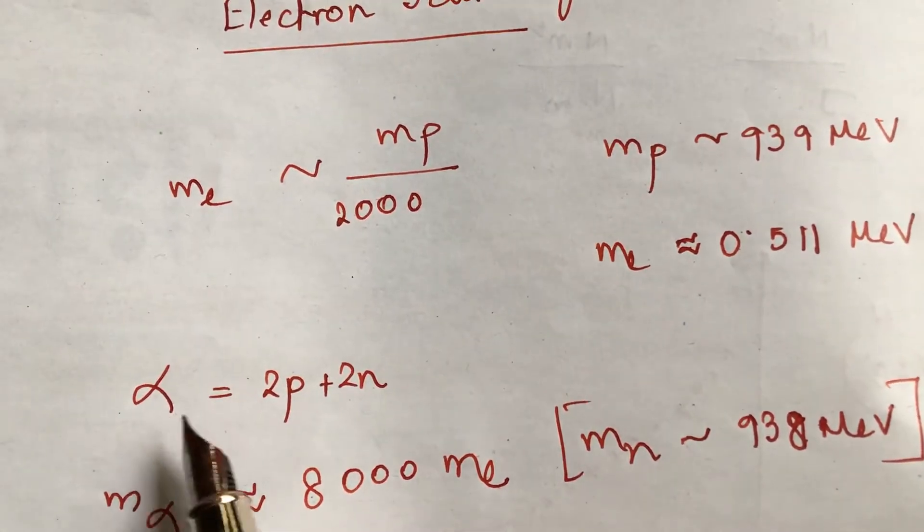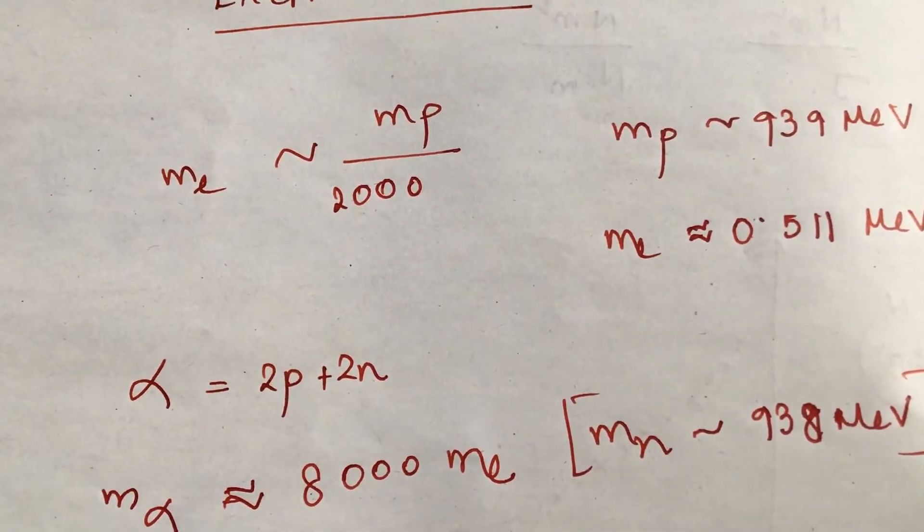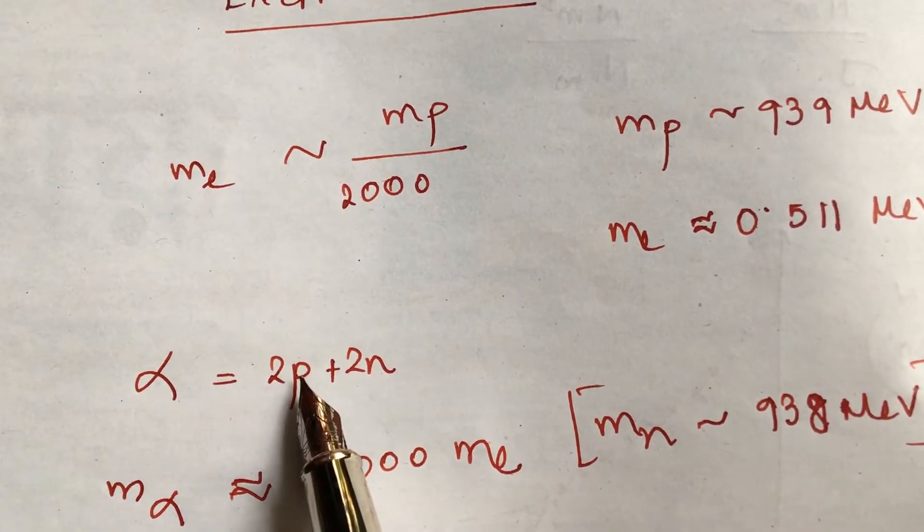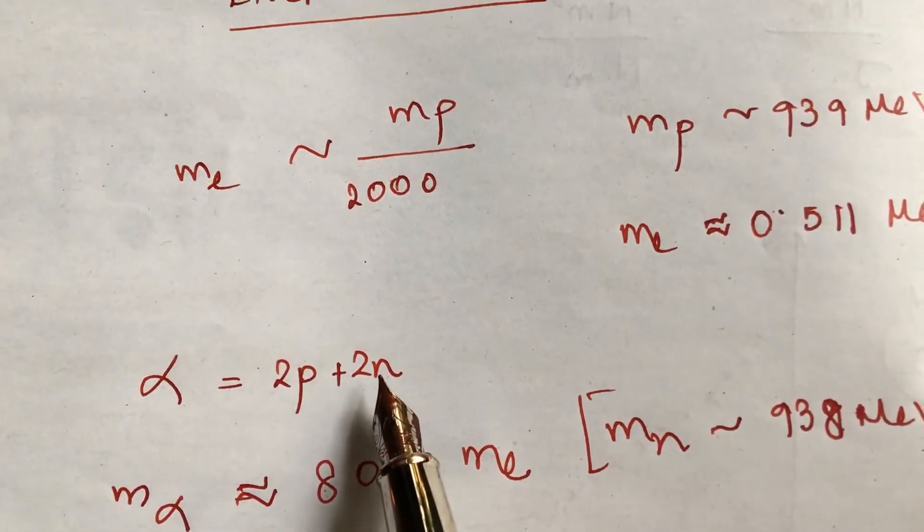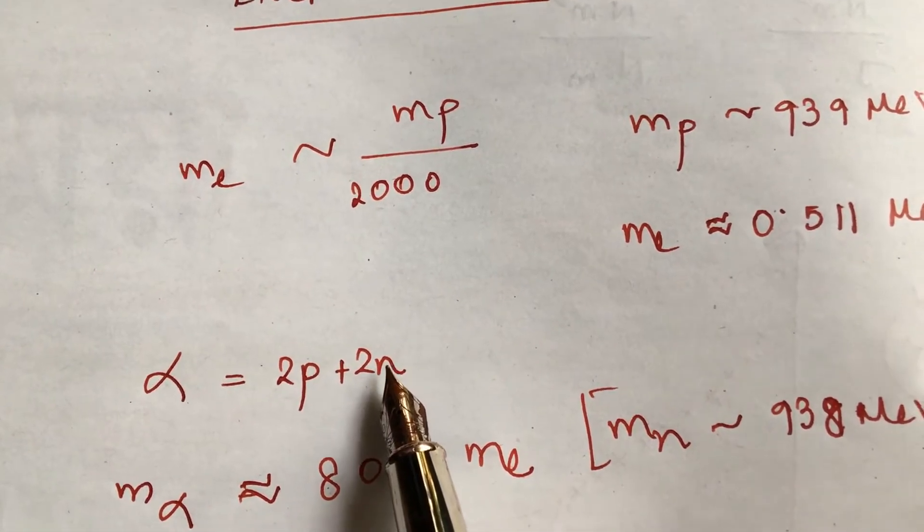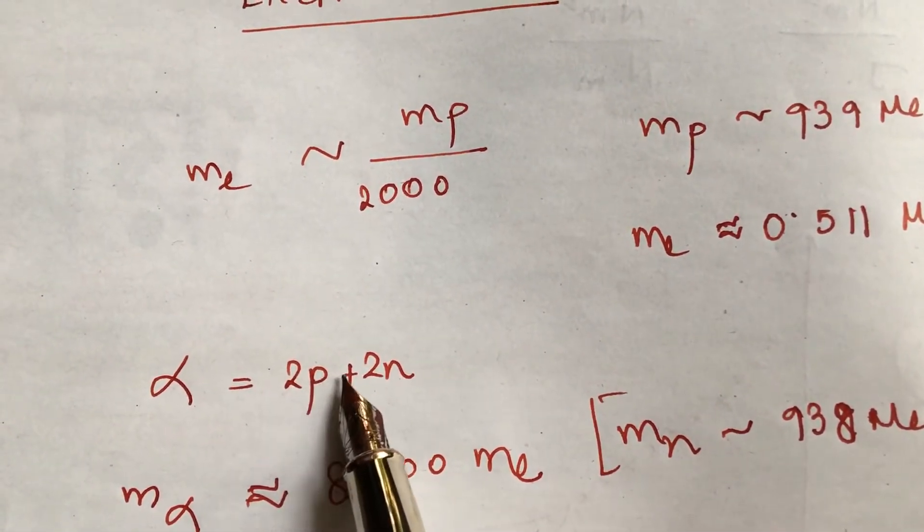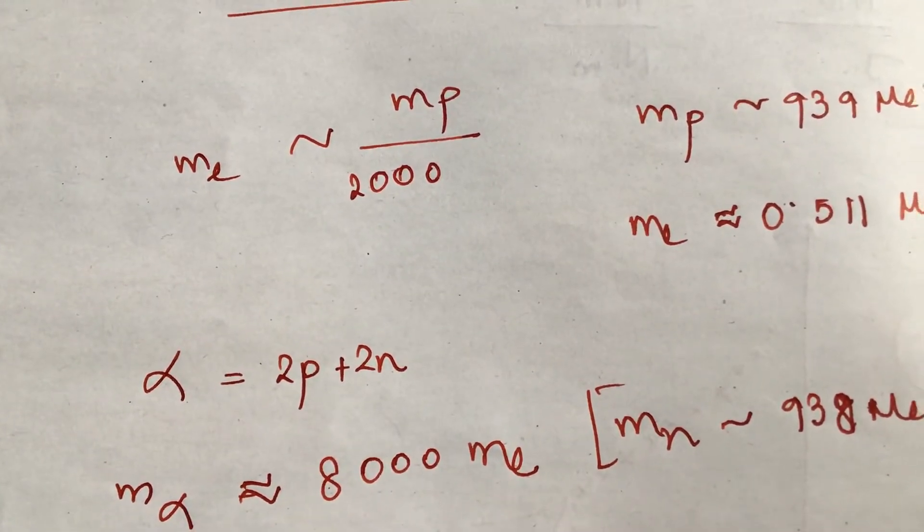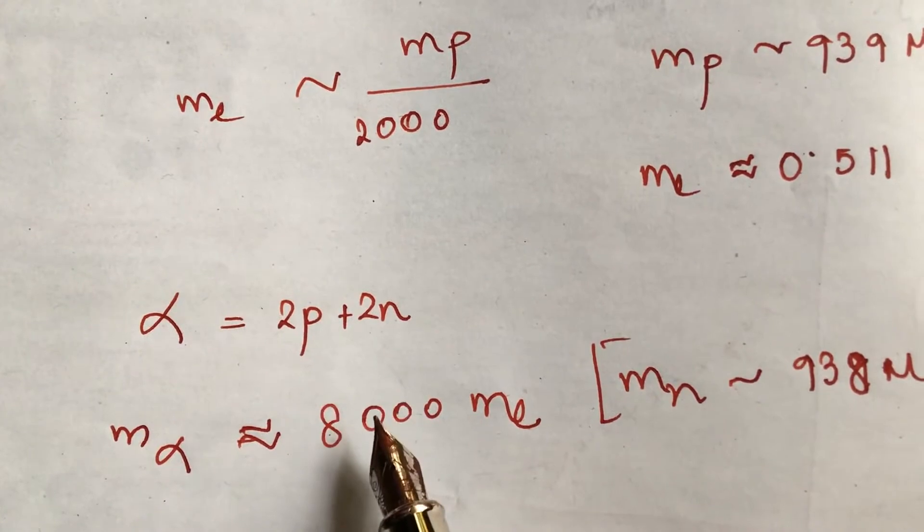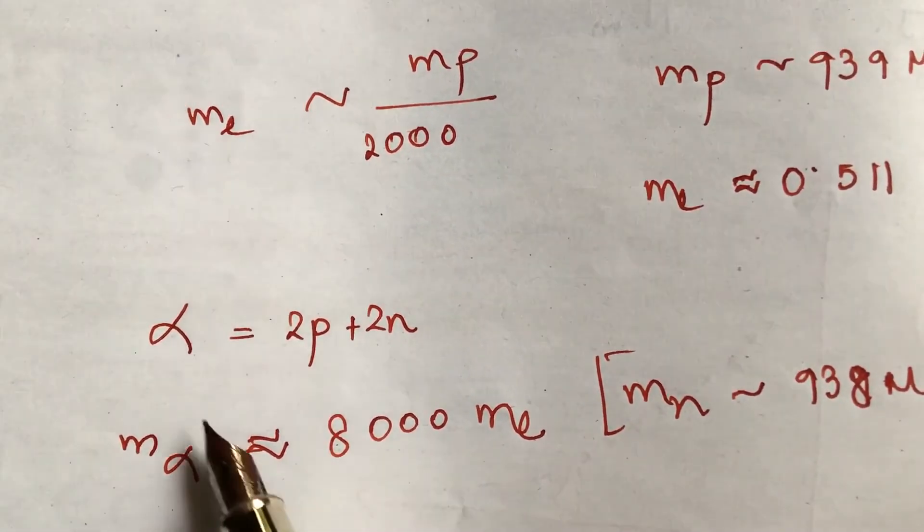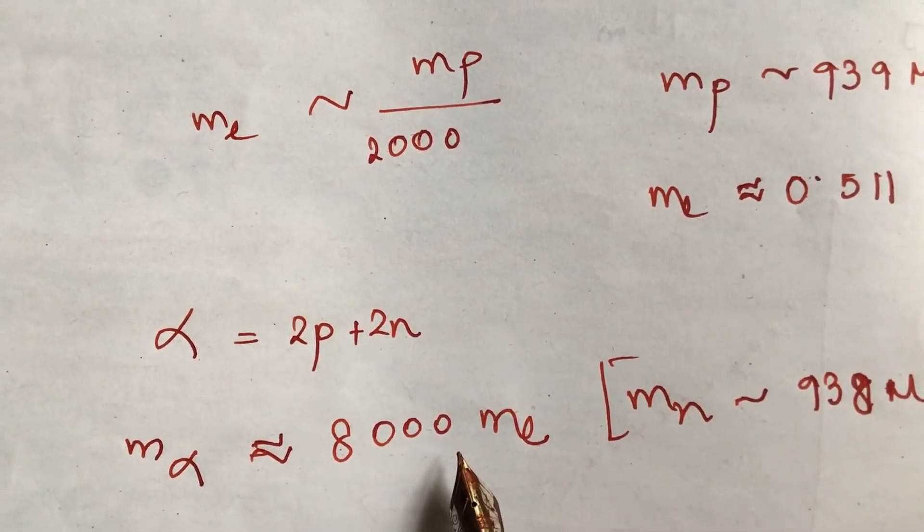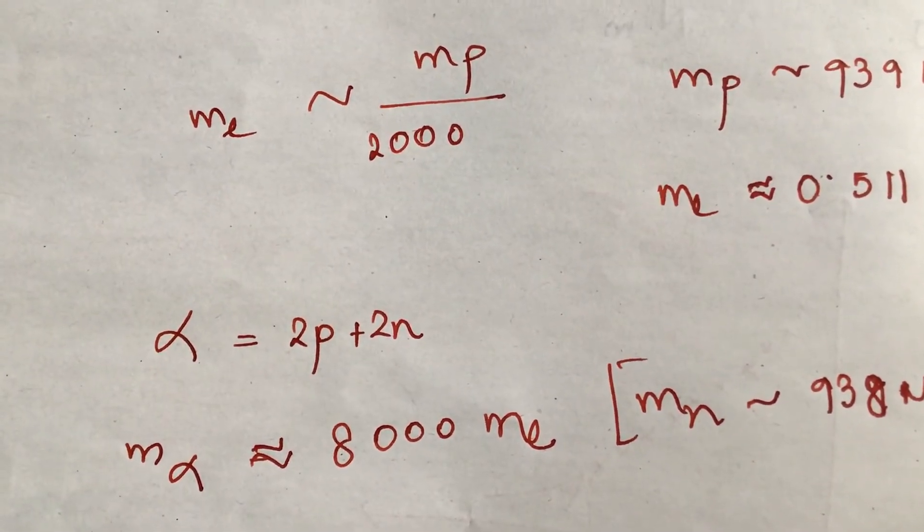And then alpha particle consists of two protons plus two neutrons. So two protons means almost thousand plus thousand, two thousand million electron volts, plus neutron also has thousand million electron volts of mass. So it is two into one thousand plus two into one thousand, which will turn out to be four into two thousand. So an alpha particle is eight thousand times bigger, eight thousand times heavier than an electron from this relation.